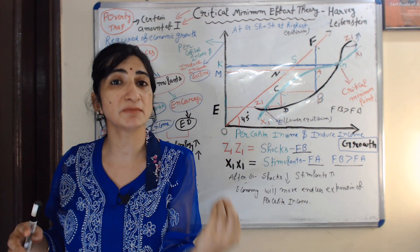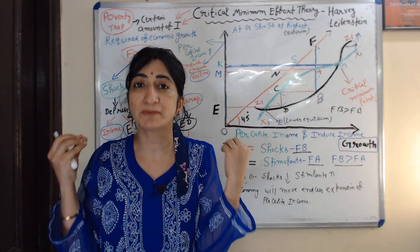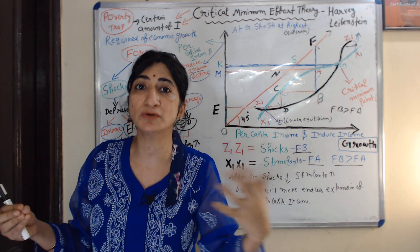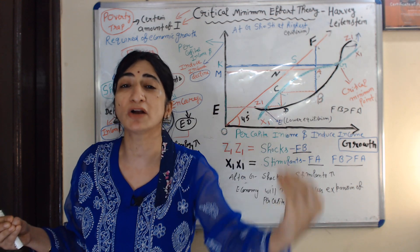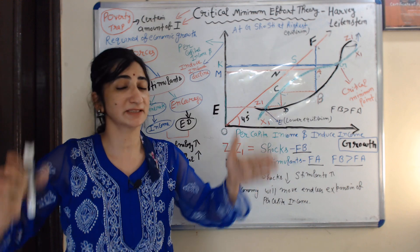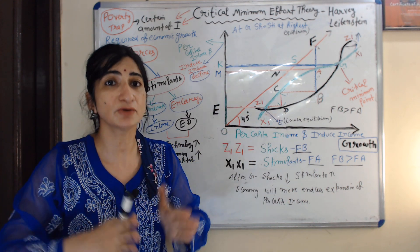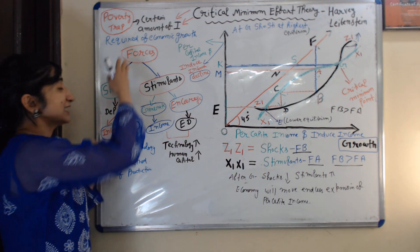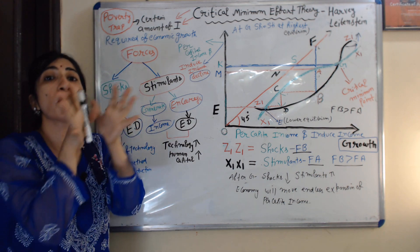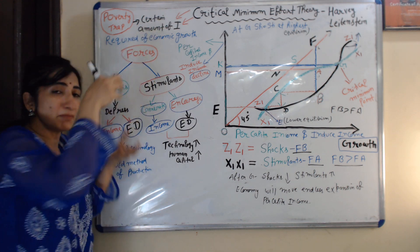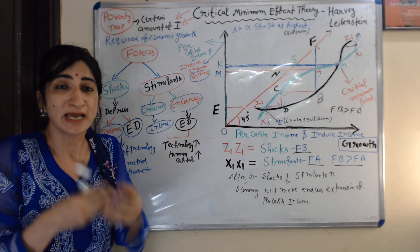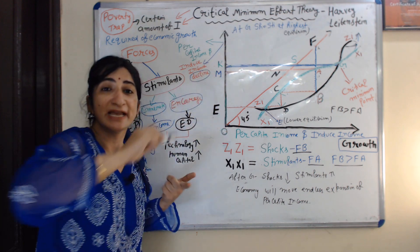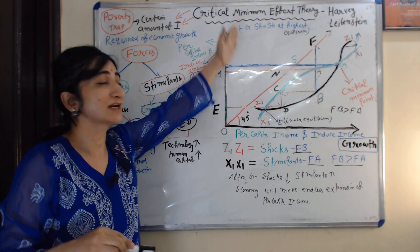According to critical minimum effort theory, if an underdeveloped country wants to break their vicious cycle of poverty, they need to do a certain amount of investment that is required for economic growth. The investment that is required for economic growth is critical minimum effort.